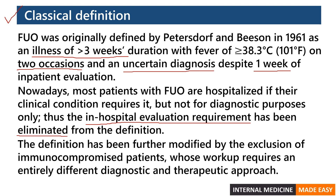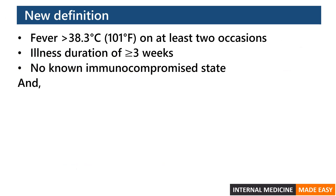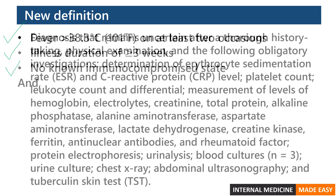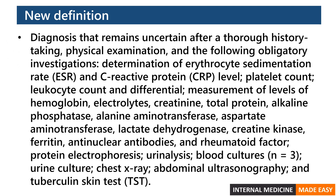The definition has been further modified by the exclusion of immunocompromised patients, whose workup requires an entirely different diagnostic and therapeutic approach. Fever of unknown origin is now defined as fever on at least two occasions, illness duration of three weeks or more, no known immunocompromised state, and a diagnosis that remains uncertain after thorough history taking, physical examination, and the following obligatory investigations.